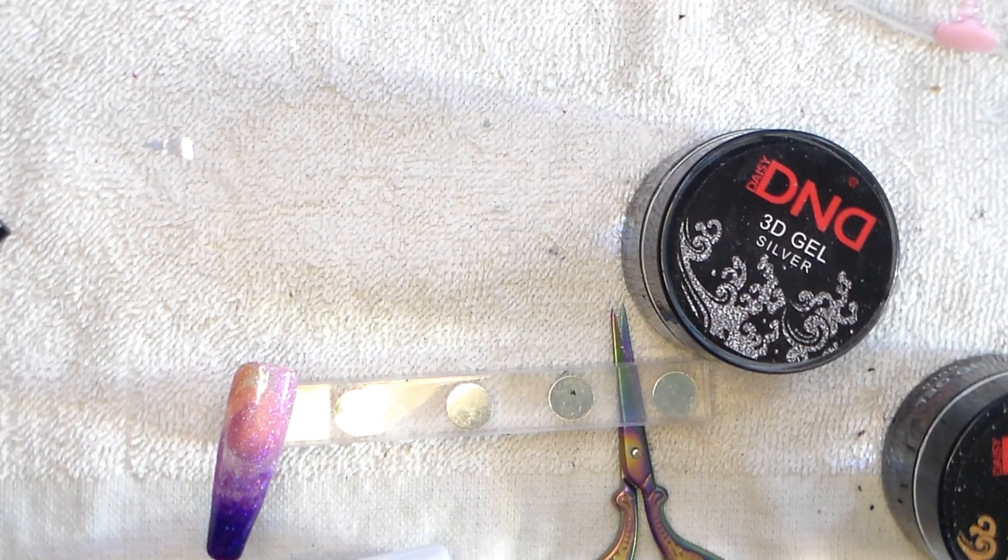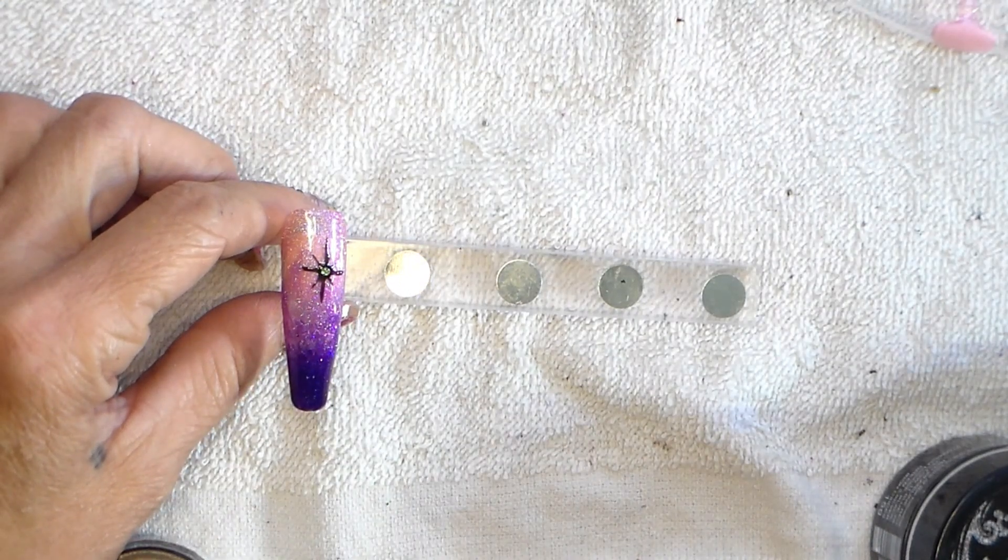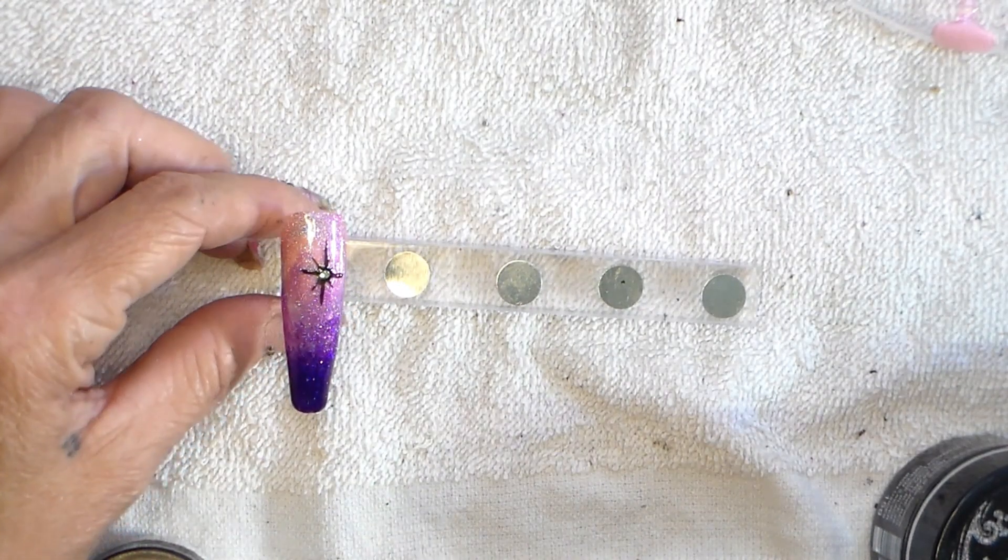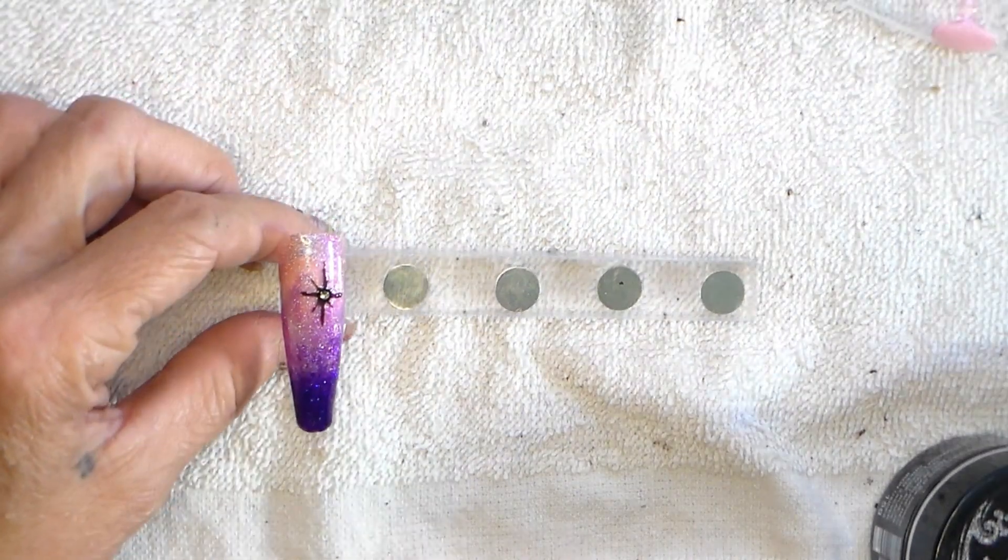We'll see how it turns out. As you can see, I used a black gel paint to make a little star and then I put a crystal right in the middle of that just to make a quick design.